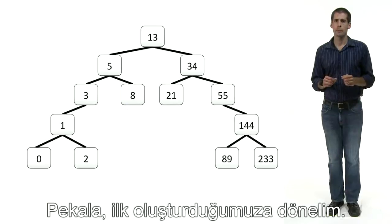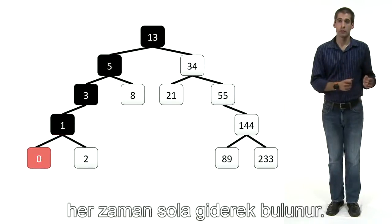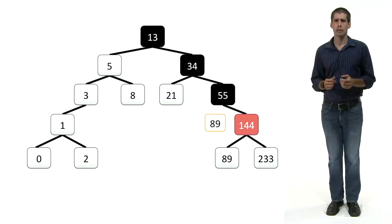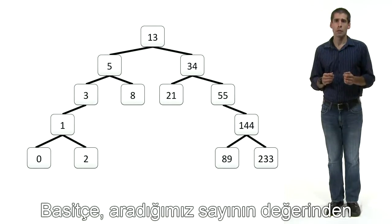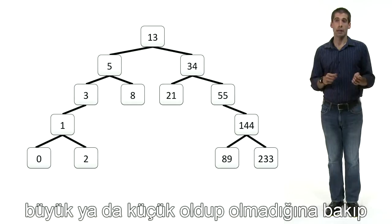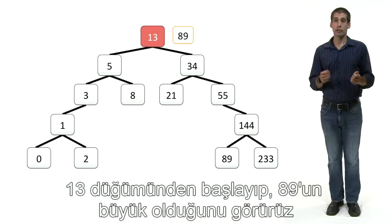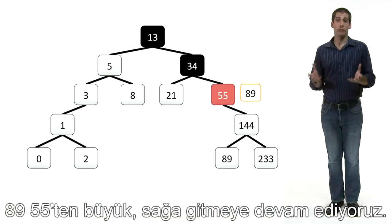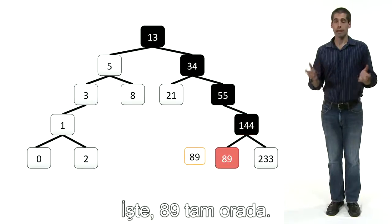We can very simply find the minimum and maximum values. The minimum can be found by always going to the left until there are no more nodes to visit. To find the maximum, one simply goes down to the right at each step. Finding any other number is just as easy. Say we're looking for the number 89 — we check the value at each node and go left or right depending on whether the node's value is less than or greater than the one we're looking for. Starting at the root of 13, we see that 89 is greater, so we go to the right. Then we see node 34, and again we go to the right. 89 is still greater than 55, so we continue right. We come to node 144 and go to the left — lo and behold, 89 is right there.